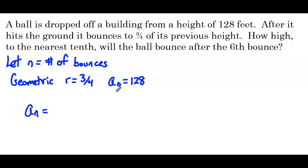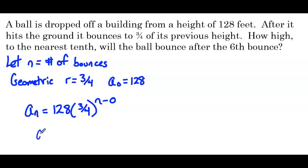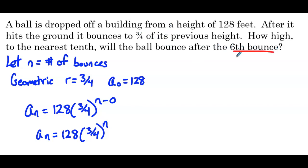So a sub n equals 128 as the coefficient, with three-fourths as the base, raised to the n. Technically it's n minus zero, but since that's just n, a sub n equals 128 times three-fourths to the n. Because this is the zero term, not the first term, we don't subtract 1. Now that we have the explicit formula, we plug in 6 for the sixth bounce: a sub 6 equals 128 times three-fourths to the sixth.